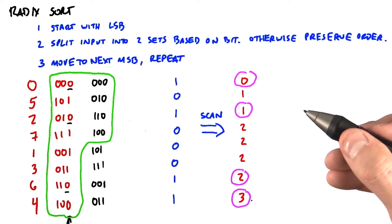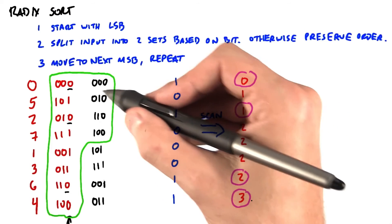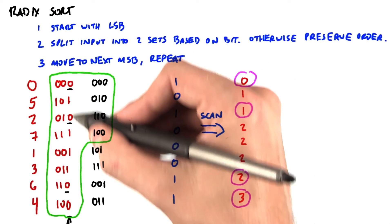Then we can begin with that value to do a second scan to compute the scatter addresses for the other half of the split, for the 1 bits.